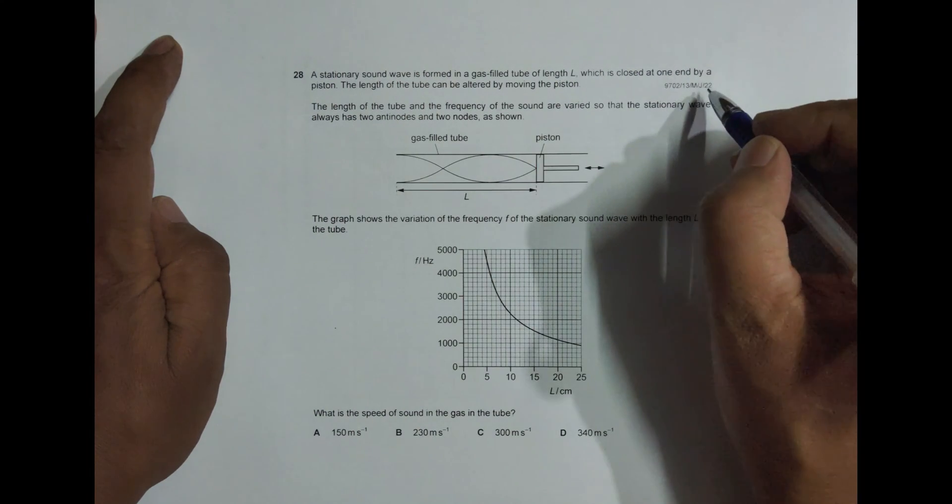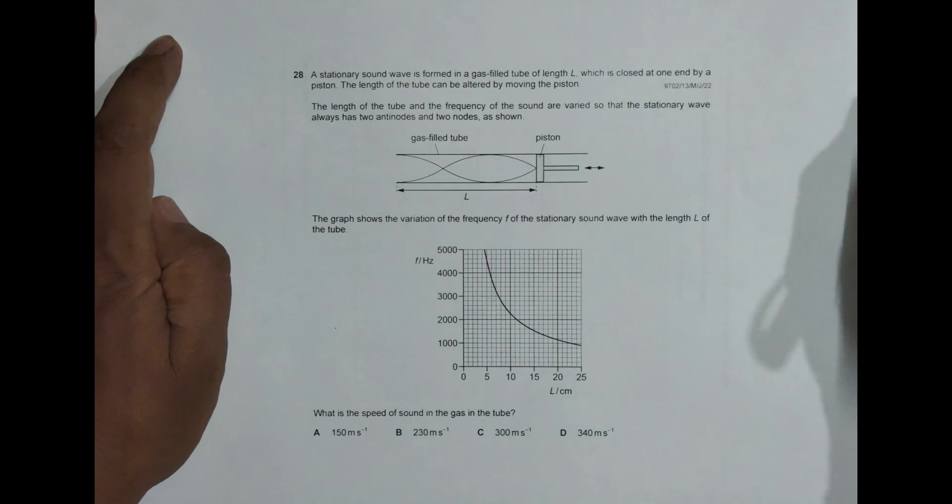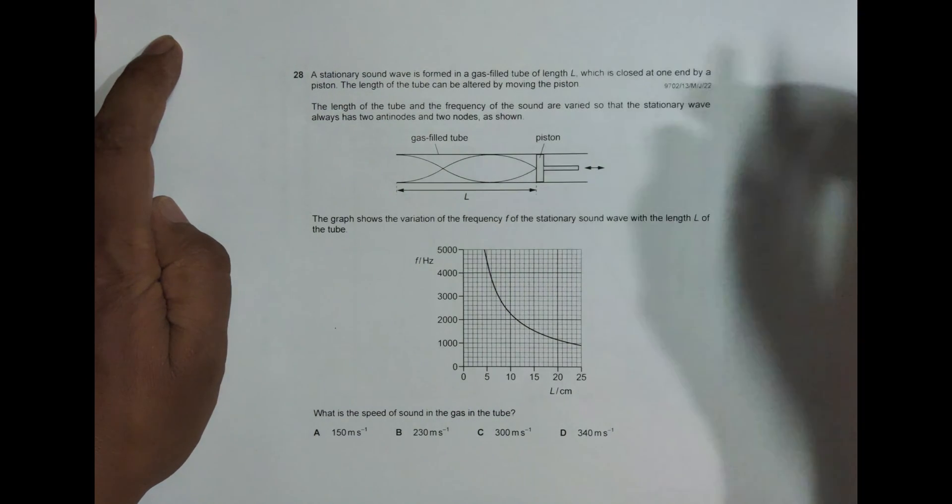Hello folks, this question is for 2022 May June paper 1-3 and the question number is 28. It is concerned about the chapter of superposition.